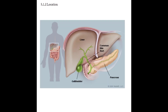The pancreas sits across the back of the abdomen behind the stomach. The head of the pancreas is on the right side of the abdomen and is connected to the duodenum, which is the first section of the small intestines, through a small tube called the pancreatic duct. The more narrow end of the pancreas, called the tail, extends to the left side of the body near the spleen.